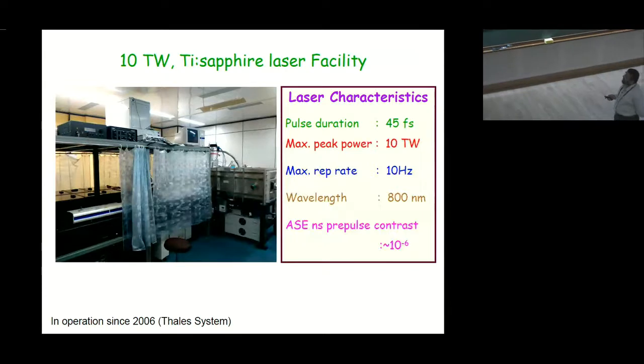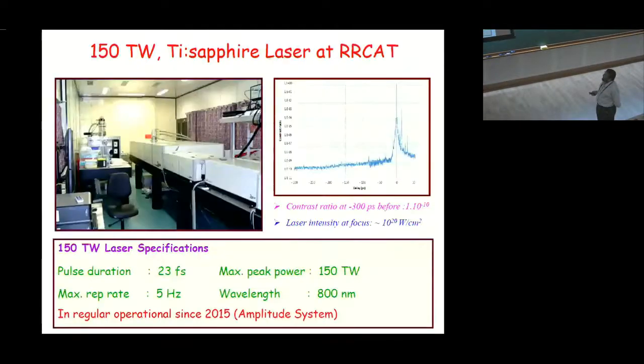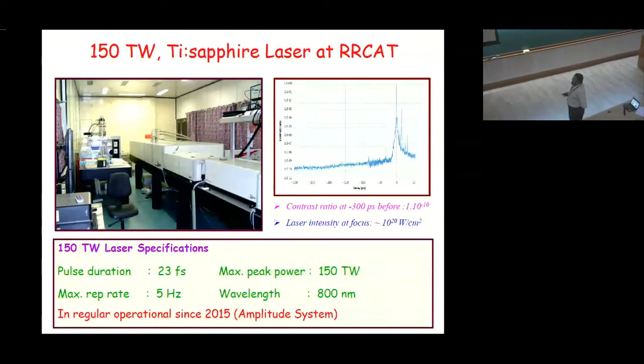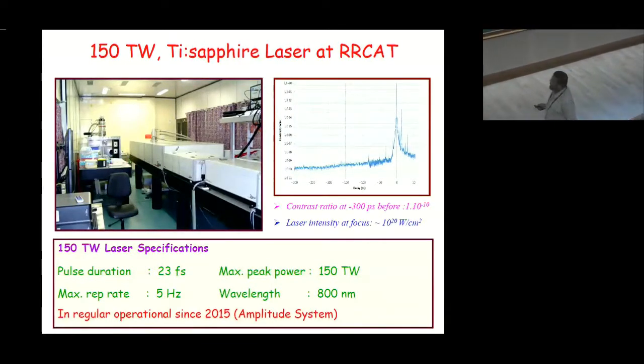So our earlier experiment results are all using these lasers and from 2015 onwards we got 150 TW laser in operation, so it is working 23 femtosecond with a peak power of 150 TW and at 5 Hz repetition rate, the contrast of this pulse is about 10 to the power minus 10 at 300 picosecond because for any such laser pulse contrast is very important parameter which will finally decide your interaction regime and this can be focused to 10 to the power 20 watt per centimeter square.